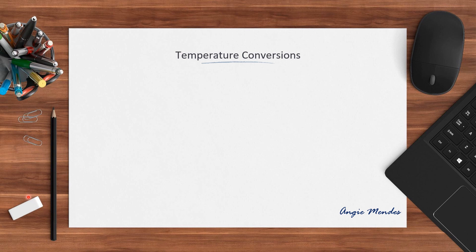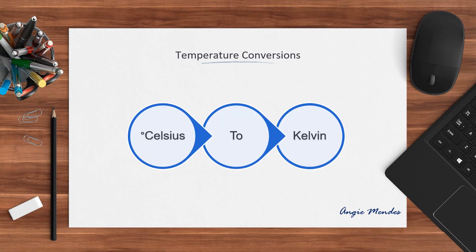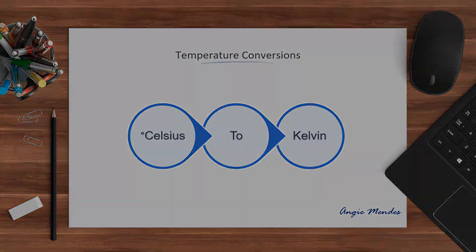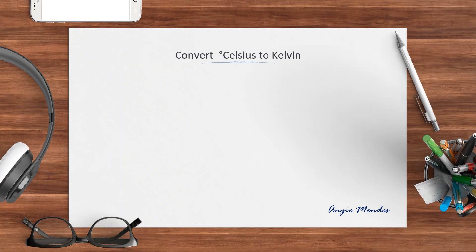We will start with a few examples and at the end of it you should be able to do the conversions quite easily. Let's begin by converting temperature from the Celsius scale to the Kelvin scale. To convert temperature from the Celsius scale to the Kelvin scale, we add 273 to the given temperature.